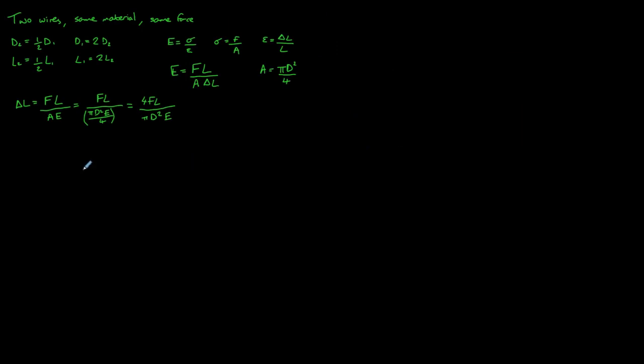So we want to find out how much greater the extension of wire 2 will be compared to wire 1. So what we're looking for is the ratio extension of wire 2 divided by the extension of wire 1. So if we now substitute those two extensions for our equation up here, we're going to get 4FL2, so F is just F because the forces are identical on the two wires, so we don't need to worry about that, but the length is different so we need to have L2 there, divided by pi D2 squared multiplied by E.